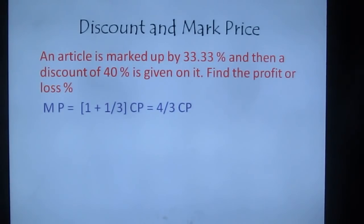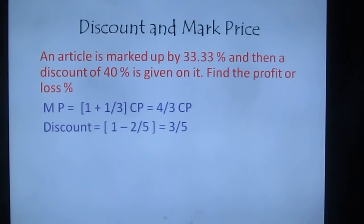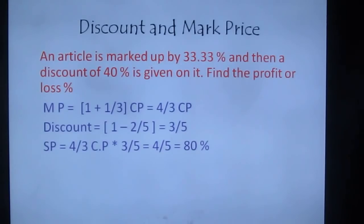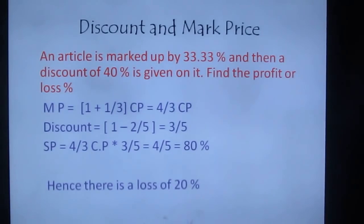Discount is 40% = 2/5, so the discount factor = (1 − 2/5) = 3/5. SP = (4/3 × CP) × (3/5) = 4/5 CP = 80% of CP. I started with 100% and now have only 80%, so there is a 20% loss.